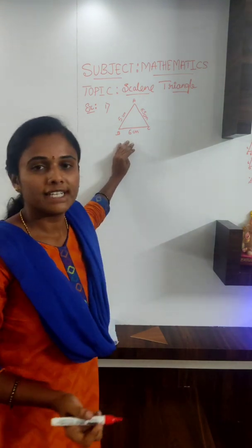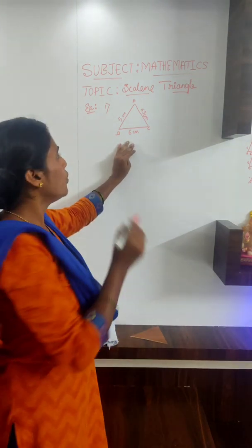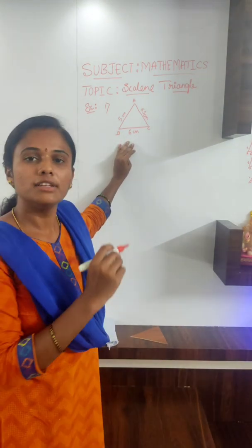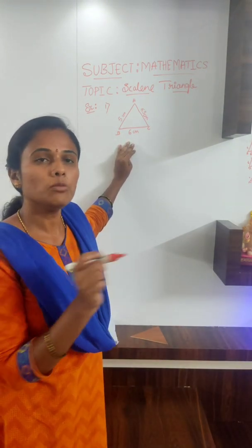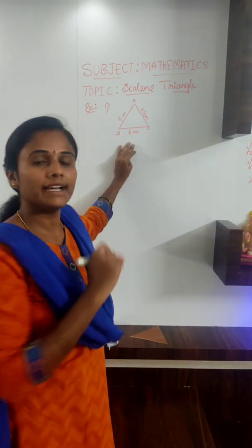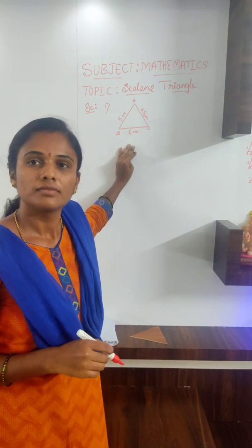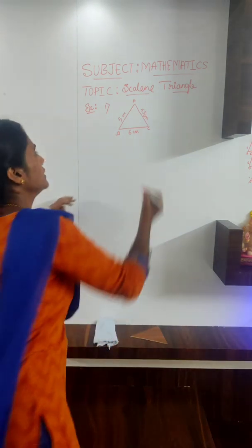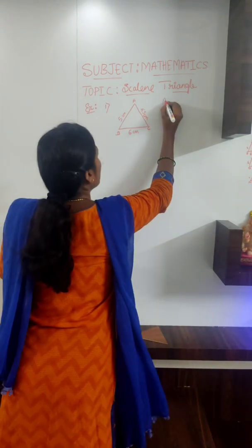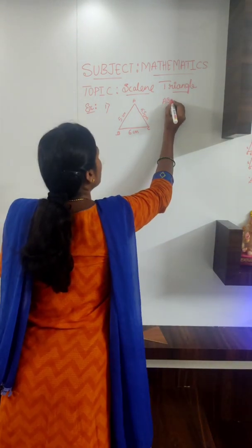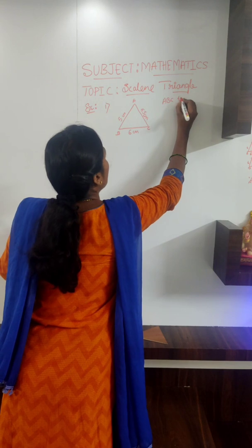For example, what is the name of this triangle? ABC triangle. Very good. It is an ABC triangle.